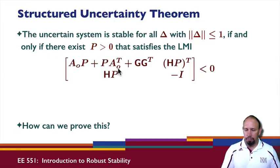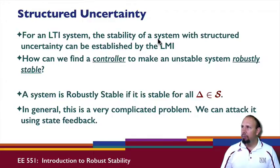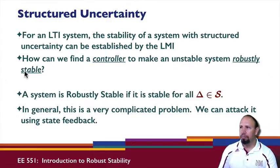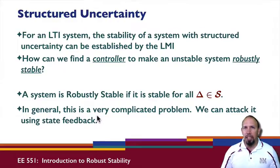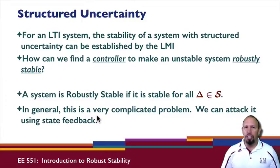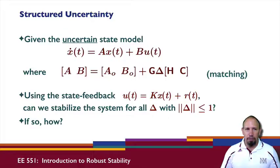For structured uncertainty in an LTI system, stability can be established by a linear matrix inequality. An important question is: how can we find a controller to ensure robust stability — that is, to make an unstable system robustly stable? A system is robustly stable if it is stable for all uncertainties in the uncertainty set. In general this is a complicated problem, but we can attack it using state feedback. State feedback is powerful: if it can be done, it can generally be done with state feedback.